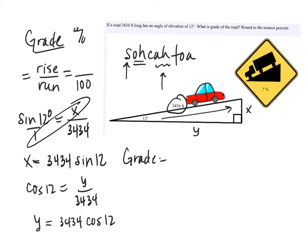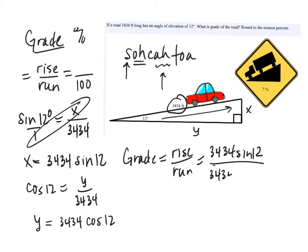Grade is rise over run, so it's X over Y — that's 3,434 times sine of 12° divided by 3,434 times cosine of 12°. The 3,434s cancel, which is handy. On the calculator, sine of 12° divided by cosine of 12° — make sure you're in degrees — is about 0.2125.